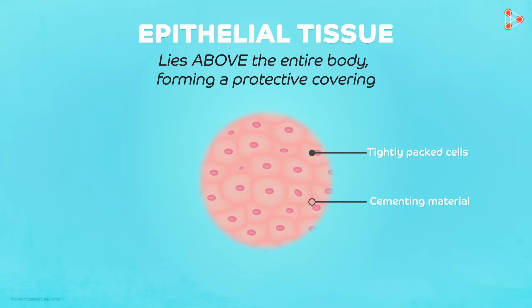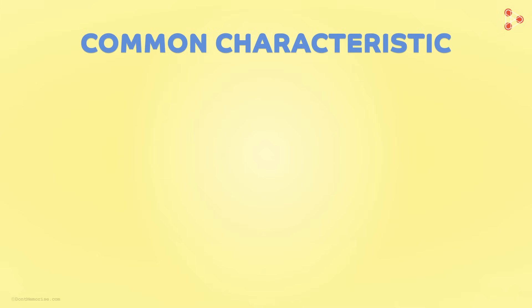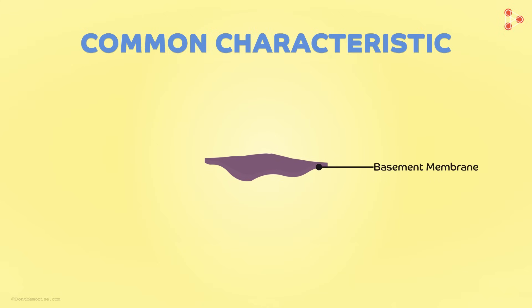When we talk about all the epithelial cells in general, we need to first understand a common characteristic between them. Whatever the type of epithelia, all of them will always have the cells resting on a thin fibrous supportive membrane-like structure called the basement membrane. The basement membrane, apart from supporting, helps to hold the cells together in a single straight line to form a uniform and consistent layer.